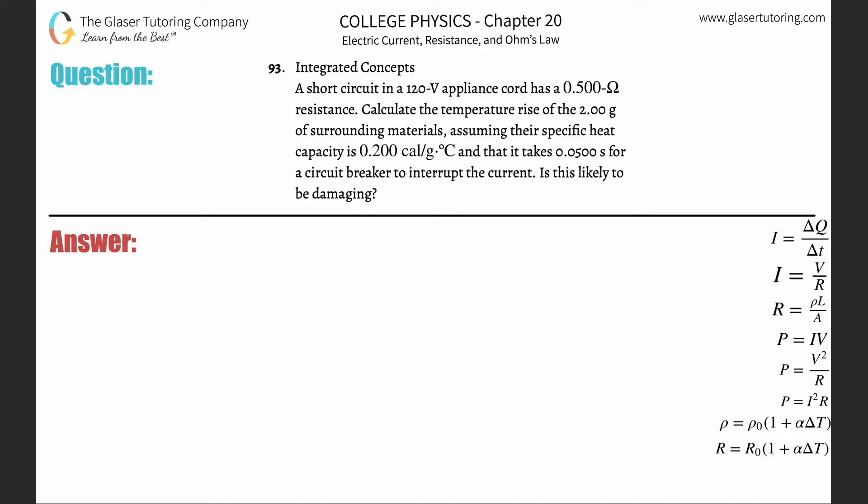Number 93, integrated concepts. A short circuit in a 120 volt appliance cord has a 0.5 ohm resistance. Calculate the temperature rise of the 2 grams of surrounding materials, assuming their specific heat capacity is 0.2 calories per gram Celsius and that it takes 0.05 seconds for a circuit breaker to interrupt the circuit.